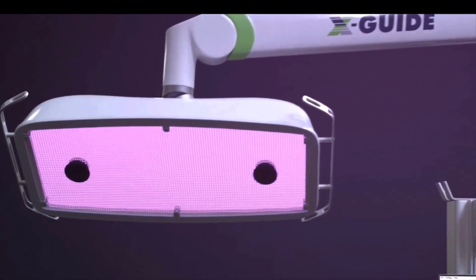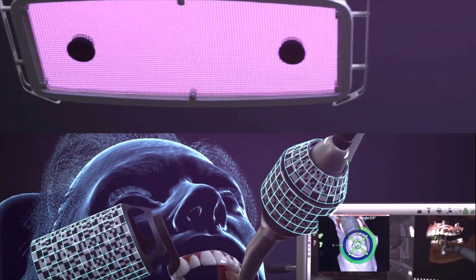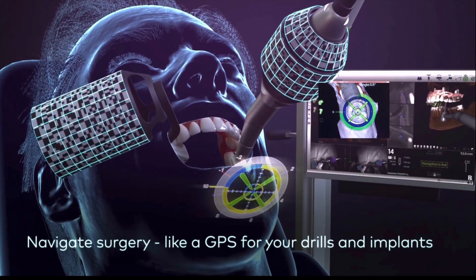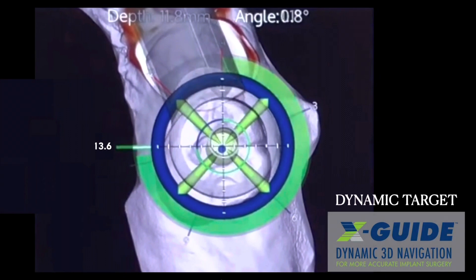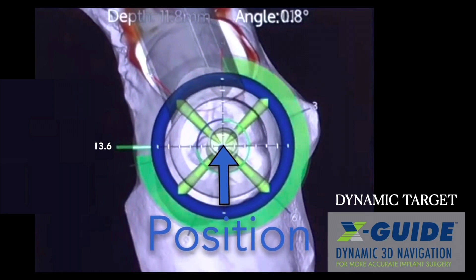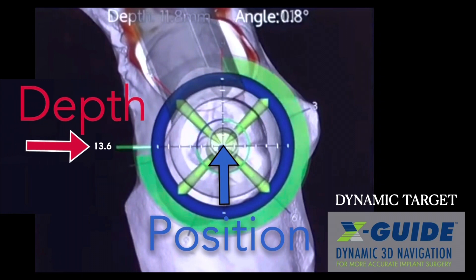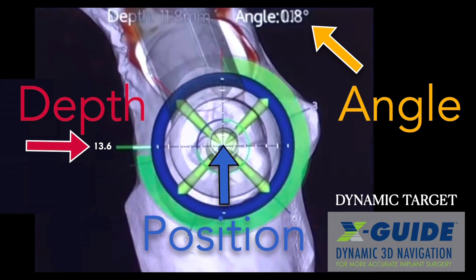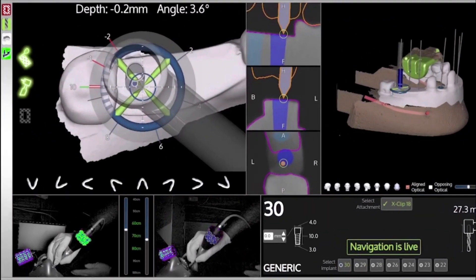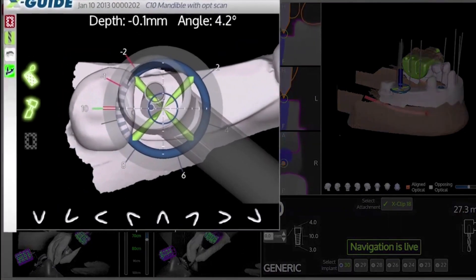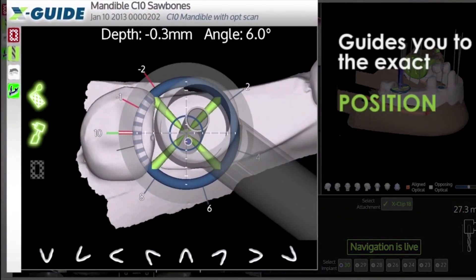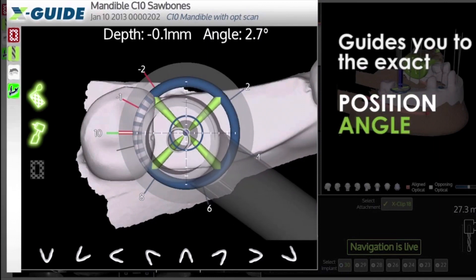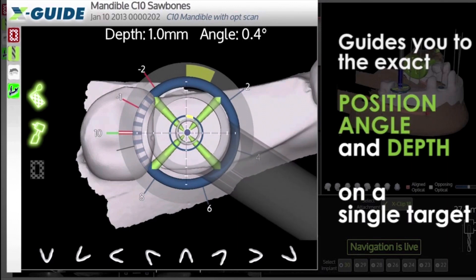The X-guide has an arm positioned over the patient with two cameras pointing down. The patient has trackers on the arch being worked on, and the handpiece also has a tracker. These allow you to see on screen the target position, depth, and angle of the implant — three key parameters for placing it at the exact depth, angulation, and position.